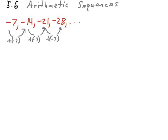If we were to continue this pattern, what would be the next three terms in the sequence? Well, adding negative 7 to negative 28, we end up with negative 35. Adding negative 7 to that, we have a negative 42. And adding a negative 7 to that, we end up with a negative 49. So the next three terms in this sequence are negative 35, negative 42, and negative 49. Pretty standard.